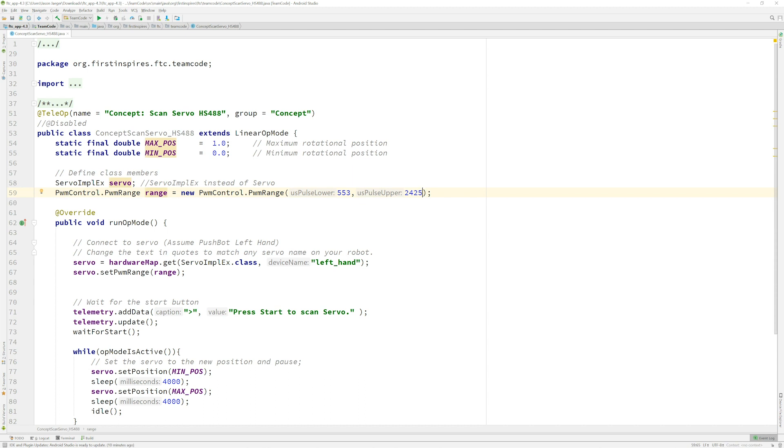Next, where we're using the hardware map.get to assign the name of the servo for this particular case, we're going to use the ServoImplEx class instead of servo. So, because we updated it up above, we have to update it down here as well, so the two line up with each other.